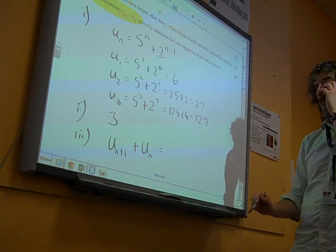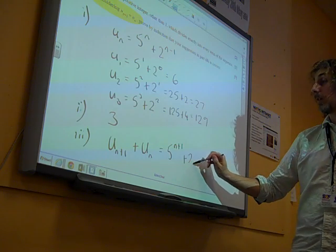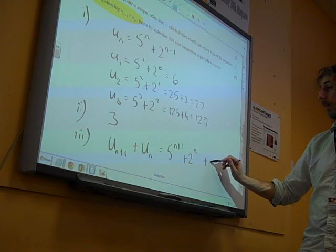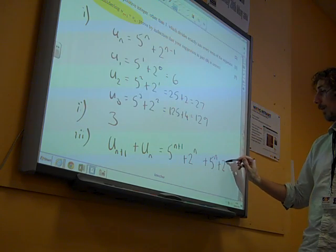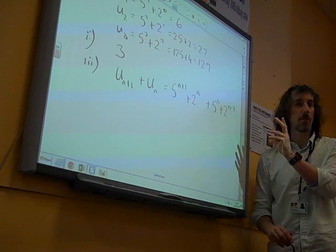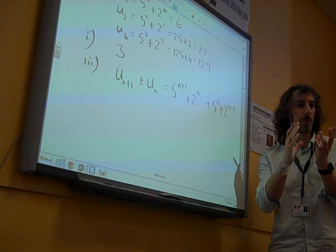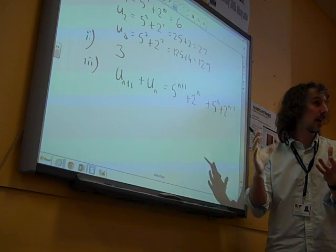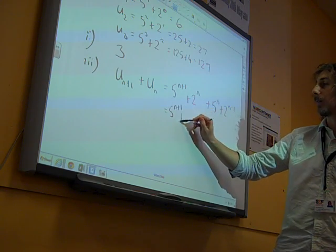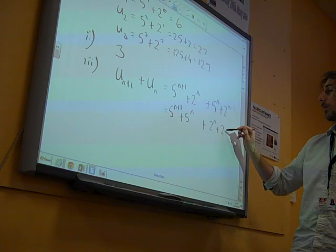Now, un plus 1 plus un is going to be 5 to the n plus 1 plus 2 to the n plus 1 minus 1, so that's 2 to the n, plus un, so plus 5 to the n plus 2 to the n minus 1. I look at that and I think there's no way I'm leaving it like that, because when we write something, our instinct is to collect together like terms and do something with it. It's 5 to the n plus 1 plus 5 to the n plus 2 to the n plus 2 to the n minus 1.